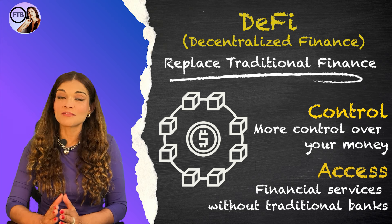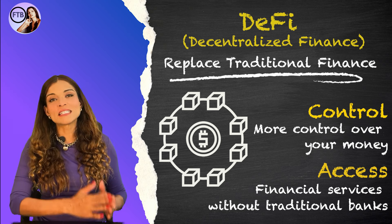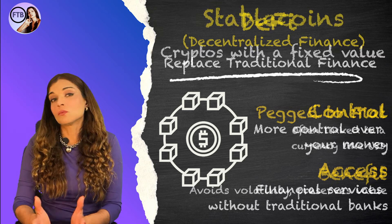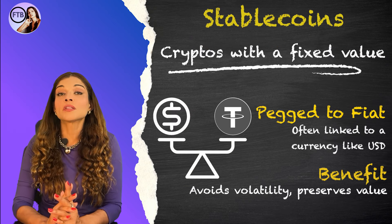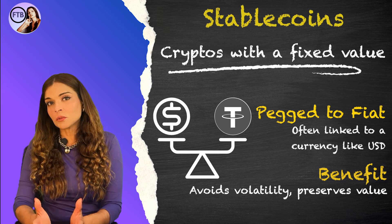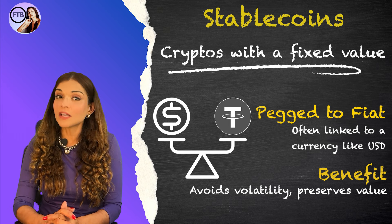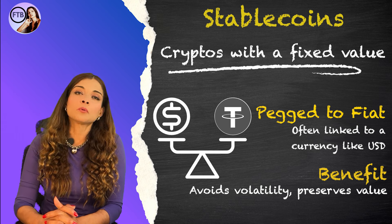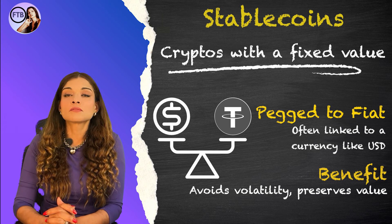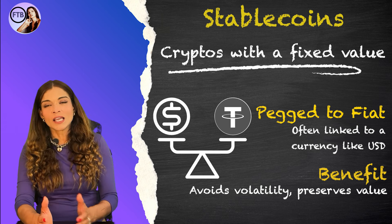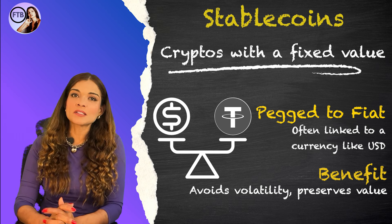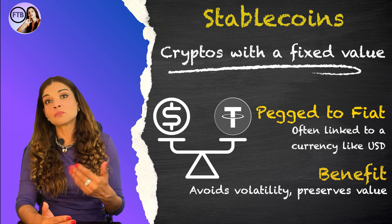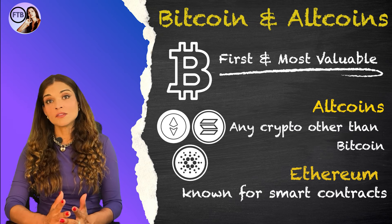DeFi, or decentralized finance, is there to replace traditional finance services with decentralized alternatives, giving you more control over your money. Then we have stablecoins, which are cryptos with a fixed value — they're usually pegged to a fiat currency like the US dollar. Stablecoins are great for avoiding price volatility. For instance, if you think Bitcoin's price might drop, you can switch to a stablecoin to preserve your capital.